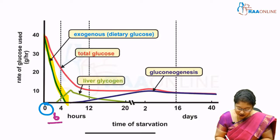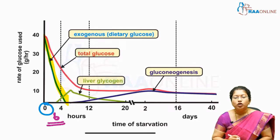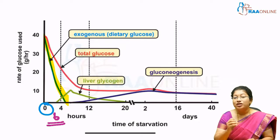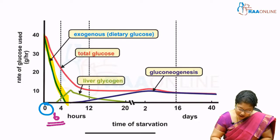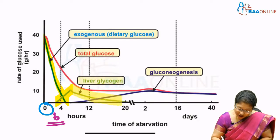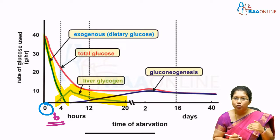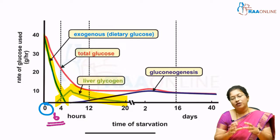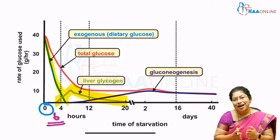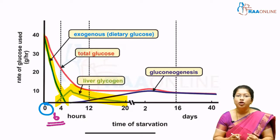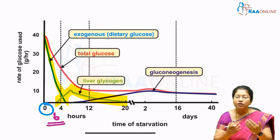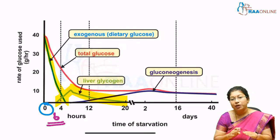Within six hours, the dietary glucose drops down. When you don't eat within this period, your liver glycogen comes into play — you can see a green shadow here. When the exogenous dietary glucose is utilized and the curve drops, the liver glycogen starts rising because the glycogen store releases glucose to your body and maintains the blood glucose level.